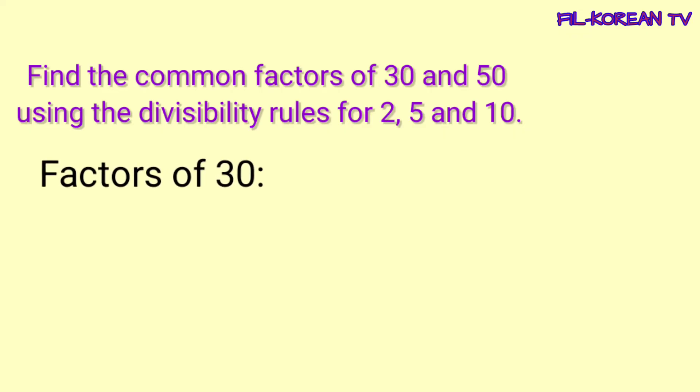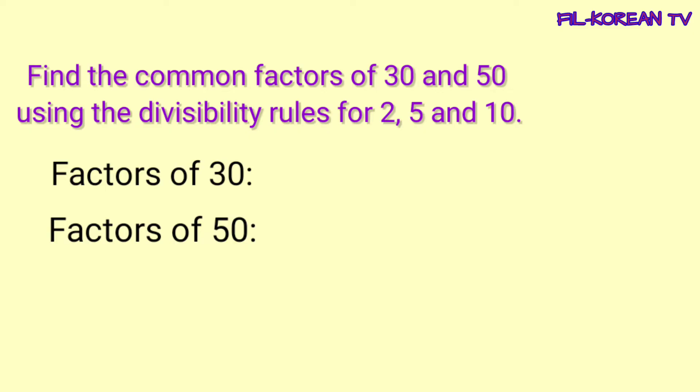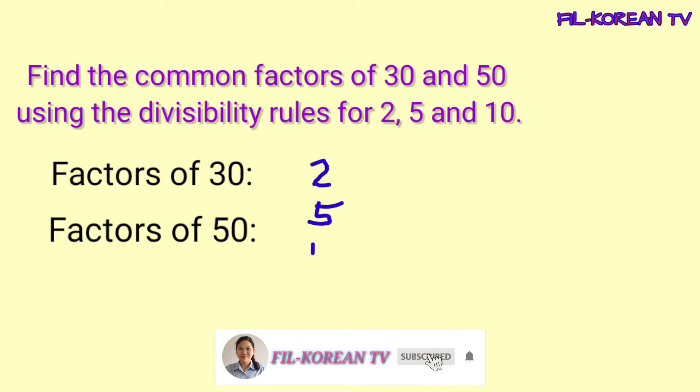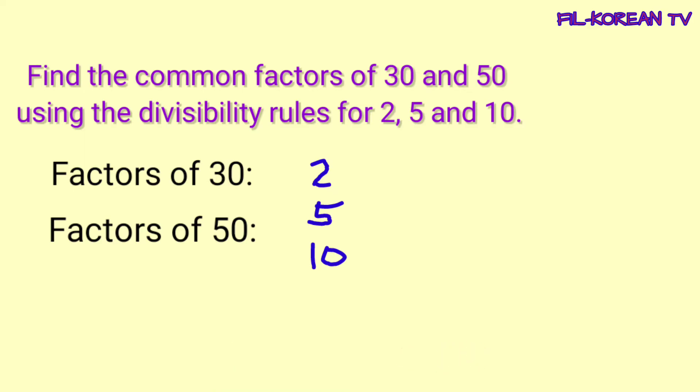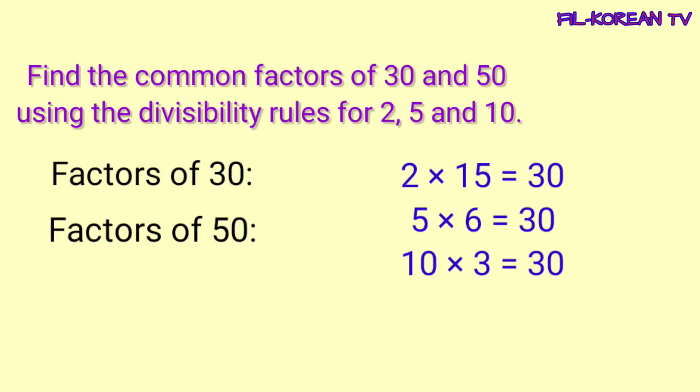Isulat natin yung factors ng 30 at factors ng 50. I-apply muna natin yung divisibility rule. Yung 30 nagtatapos sa 0 — even number siya, divisible by 2. Nagtatapos sa 0, divisible din ng 5 at divisible ng 10. Ibig sabihin, mayroon na siyang factor na 2, 5, at 10. Ngayon, isipin natin kung ano yung kaparis ng 2, 5, at 10 para kapag i-times natin ay magiging 30. 2 times 15 equals 30. 5 times 6 equals 30. And 10 times 3 equals 30.